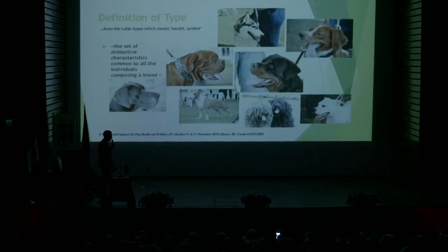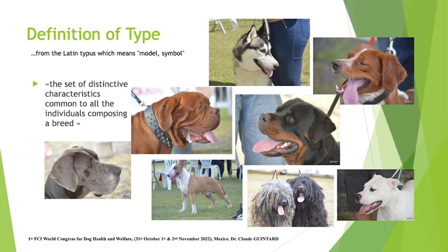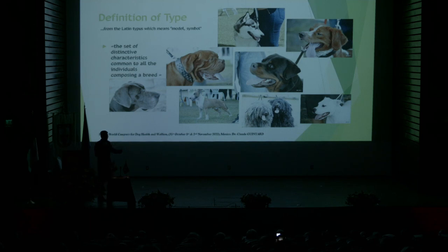What is in the standards what we call the type? The type, coming from the Latin typus, which means model and symbol, is the set of distinctive characteristics common to all the individuals composing a breed. And it is what we can see straight away in each breed you have here.